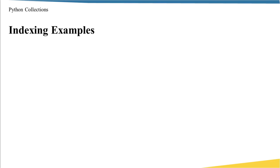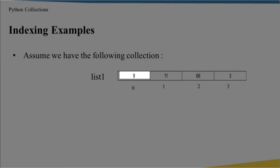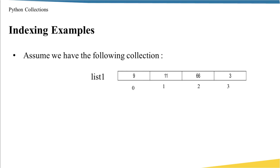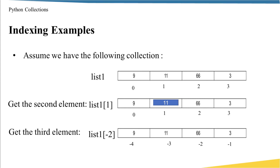Let's see some examples to understand indexing better. Assume we have a collection named list_one with elements 9, 11, 66, and 3, where the index of the first item is 0, the second is 1, and so on. If I want to get the second item, I use the index operator after the list name — I open a square bracket and put 1, which means the second item — and I get 11. Now let's get the third element using negative indexing: minus one is the last item, minus two is the item before last. So list_one[-2] gives me 66.